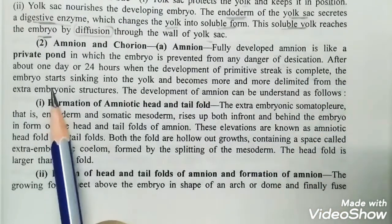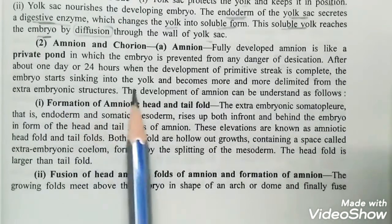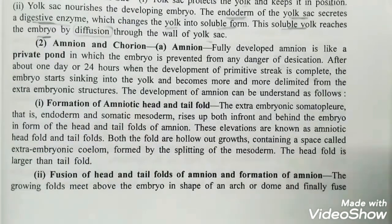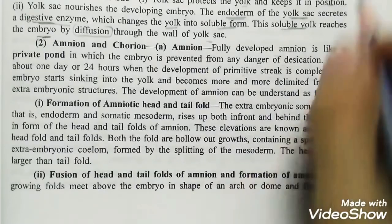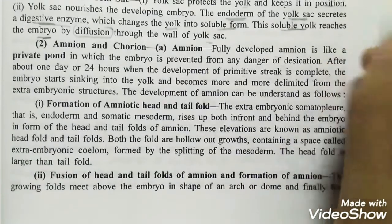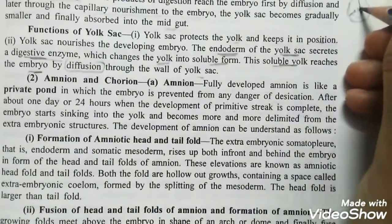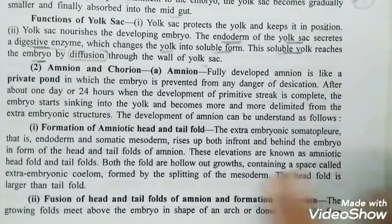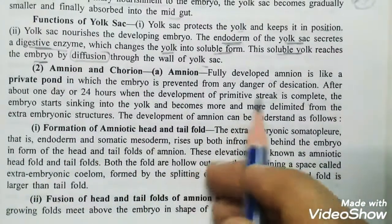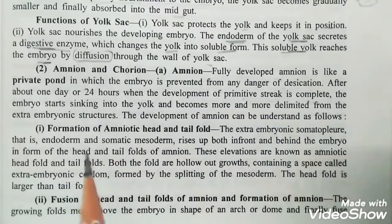Now the embryo starts sinking into the yolk. The yolk seems to form a tube of cells — it goes from within the yolk. The embryo keeps being enclosed in the yolk and becomes more and more delimited from the extra-embryonic structures.